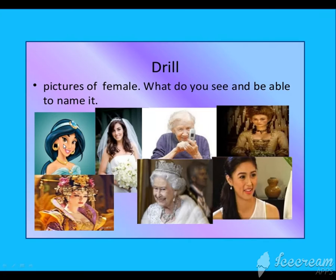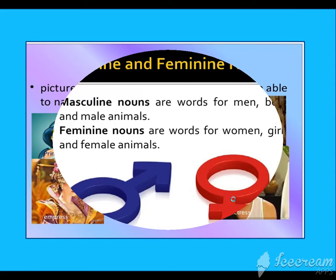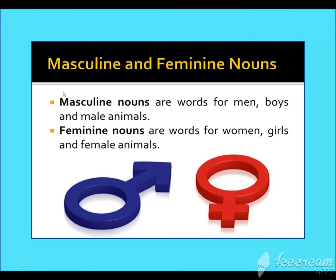Now look at these pictures — these are all females: Bride, Princess Jasmine, Queen Elizabeth, Grandmother, Duchess, Actress. These are called masculine and feminine. Words used for men, boys, or male animals are called masculine. Words or nouns used for women, girls, and females are called feminine.